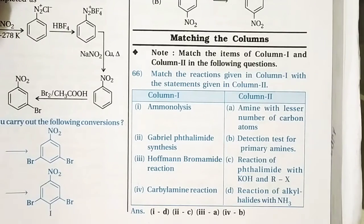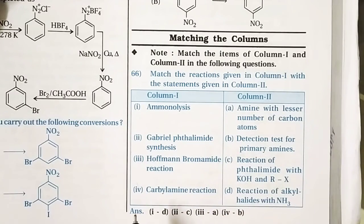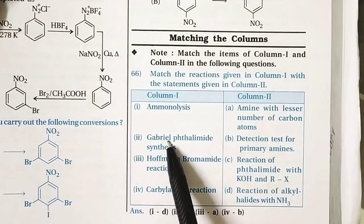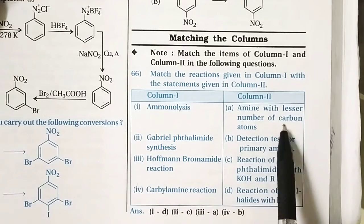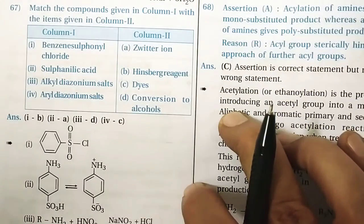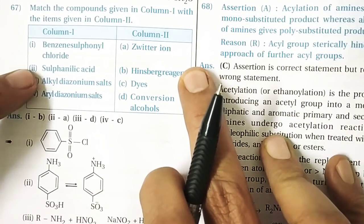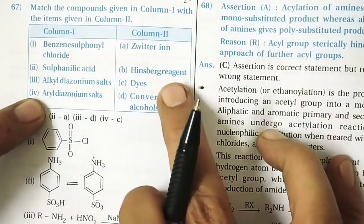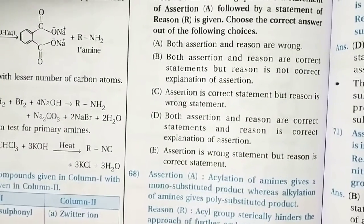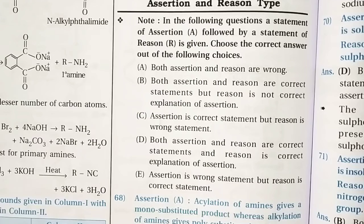Question 65: Matching the columns. Ammonolysis involves alkyl halides reacting with ammonia. Gabriel phthalimide synthesis involves the reaction of phthalimide with KOH, giving an amine with a lesser number of carbon atoms. Carbylamine reaction is a detection test for primary amines. Hinsberg reaction uses benzene sulfonyl chloride. Sulfanilic acid exists as a zwitterion. Alkyl diazonium salts are converted to alcohols, while aryl diazonium salts are stable and used as dyes.